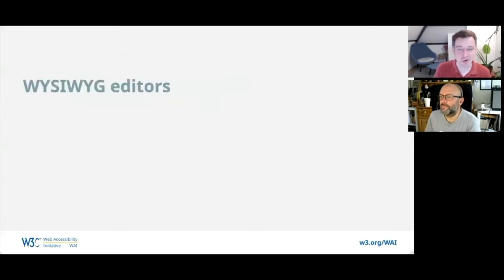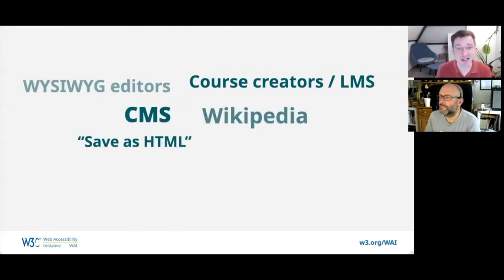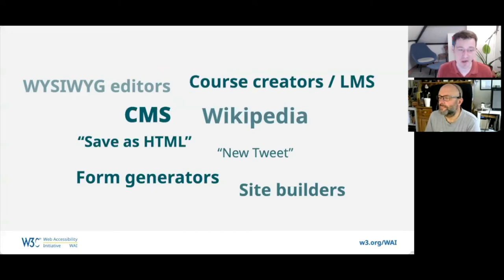Authoring tools are tools that create web content, and they can improve a lot of accessibility at once. For instance: WYSIWYG editors, course creators, learning management systems, CMSs, wikis, save-as-HTML functionality, social media, form creators, and site builders — these are all examples of things that can create web content and really increase your accessibility if they embed it.